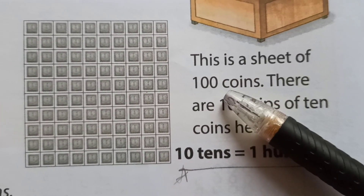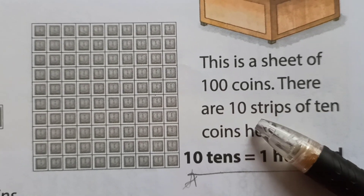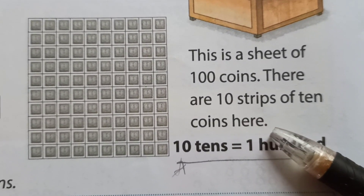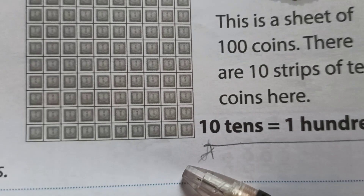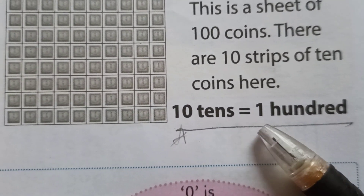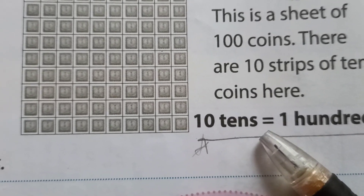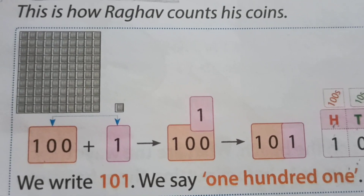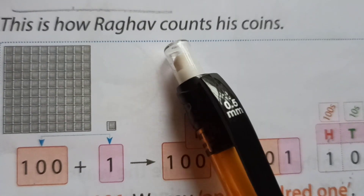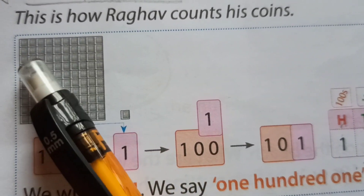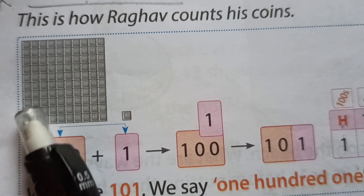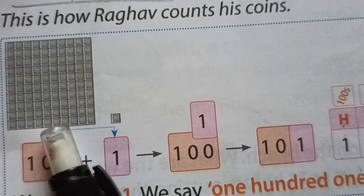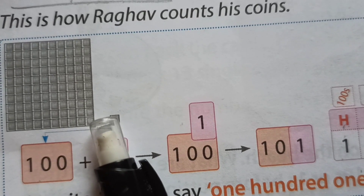This is a sheet of 100 coins. There are 10 strips — you already counted. How many strips? 10 strips of 10 coins each. Means 10 tens are how many? 100. So 10 tens is equal to 100.